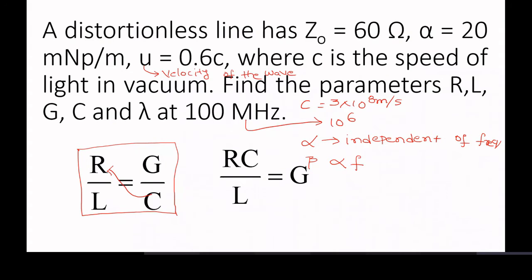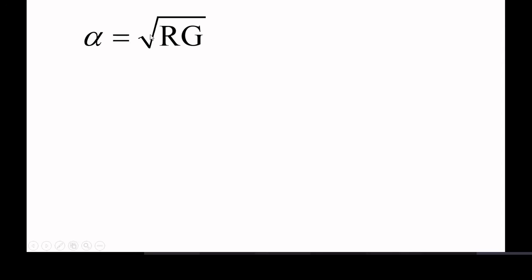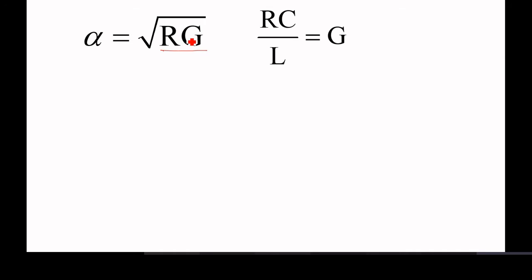For a distortionless line, the attenuation constant is given by square root of R into G. If you recall, for a distortionless line, alpha is given by square root of R into G. Now, substitute here in place of G — substitute RC by L.